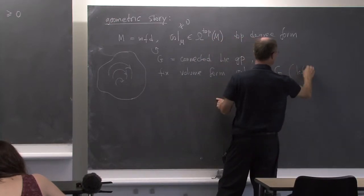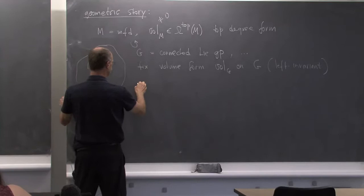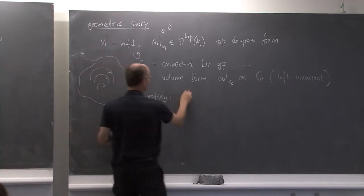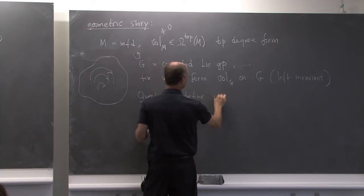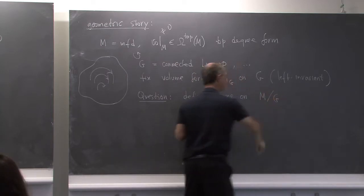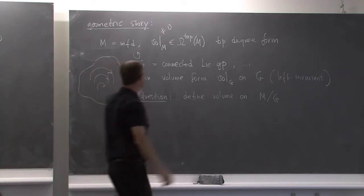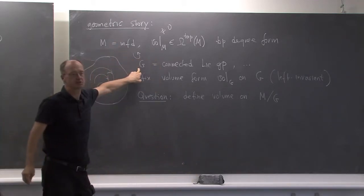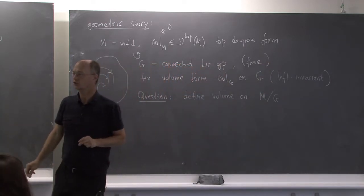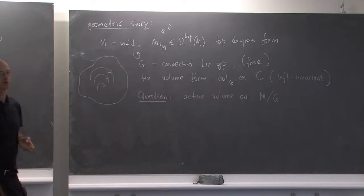The goal is as follows: fix a volume form — volume G — on G, say left-invariant. We would like to address the following question: define a volume form on M mod G. Of course M mod G might be a bad space, but if the situation is good — for instance G is compact and the action is free — then M mod G is a manifold and there is a well-defined question of how to define the volume on M mod G.